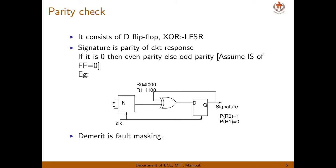The second technique is parity check — a well-known technique. To generate a parity bit you need an XOR gate. Since data is fed serially, a D flip-flop is also required. Instead of storing all the output, the parity of the output is stored as the signature. Assume the initial state of the flip-flop is 0. The fault-free output is 1 0 0 0, and XOR-ing gives a signature of 1 — odd parity — which is the expected output.